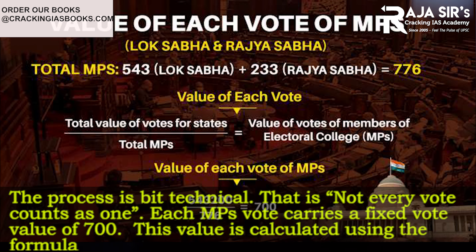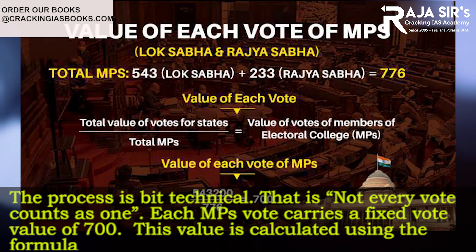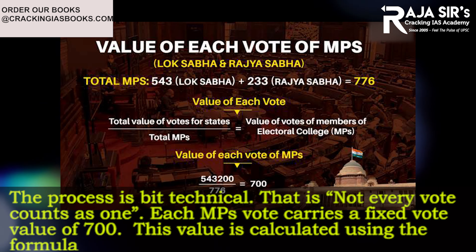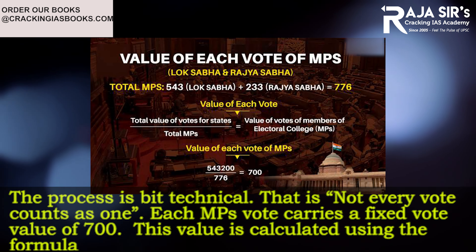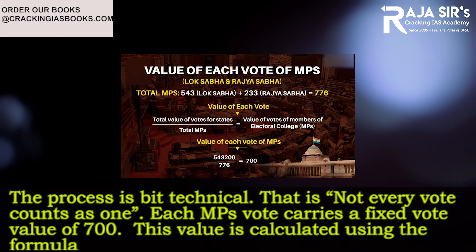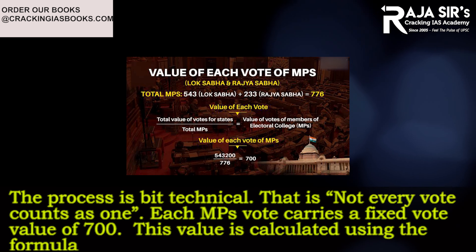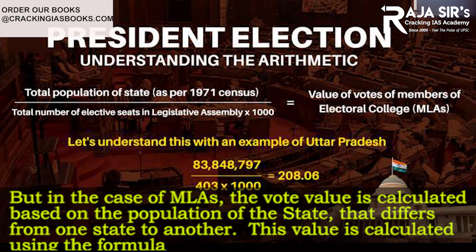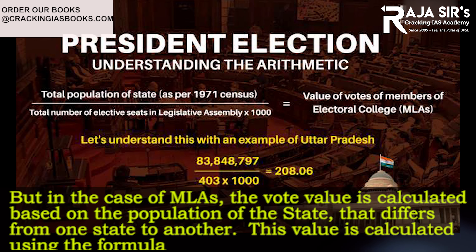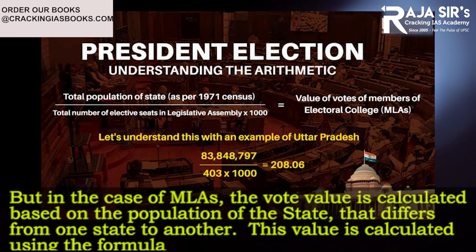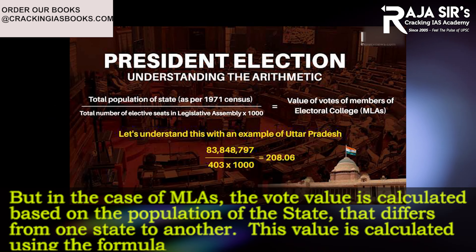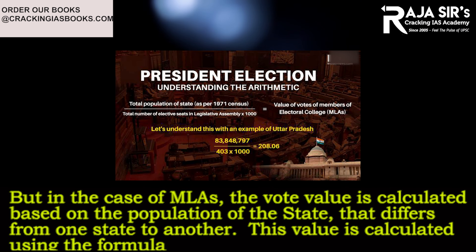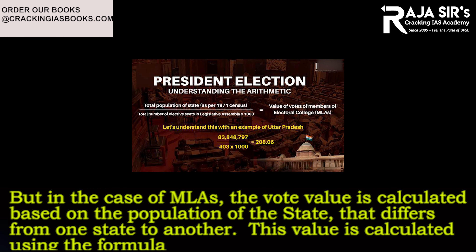The process is a bit technical — not every vote counts as one. Each MP's vote carries a fixed vote value of 700, which is calculated using this formula. But in the case of MLAs, the vote value is calculated based on the population of the state, which differs from one state to another, and is also calculated using a specific formula.